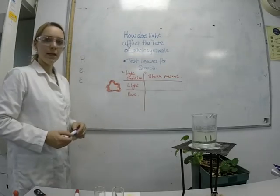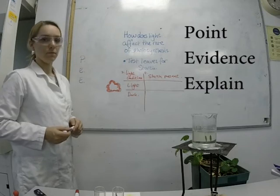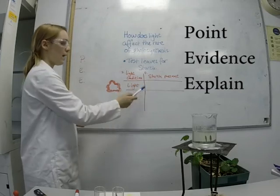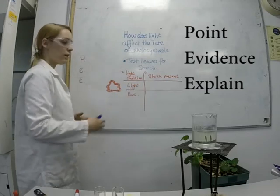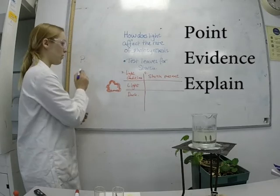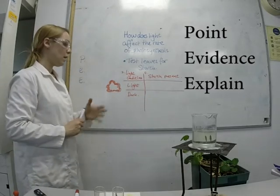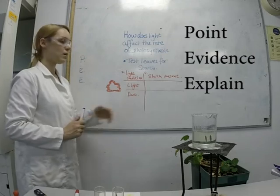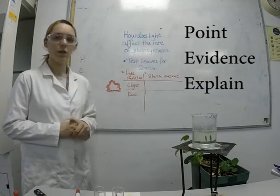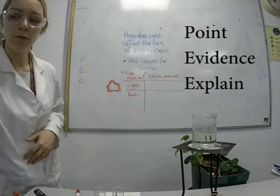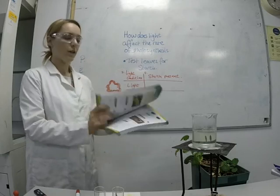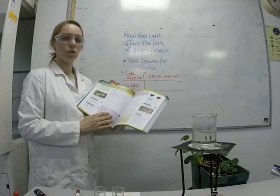You will need to write a PEE paragraph to analyse and interpret your data. Your point will be where starch is more present — for example: starch is present in the light condition and not present in the dark condition. The evidence is that the light condition turned black when tested for starch and the dark condition stayed orange. To write the explanation, you may need to look up information on pages 128 to 129 in the AQA textbook, which covers this practical and explains what has happened.